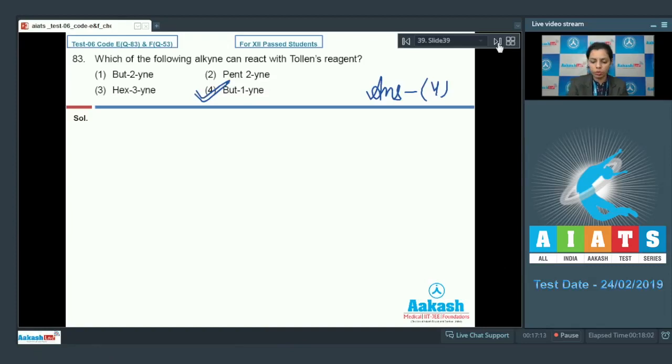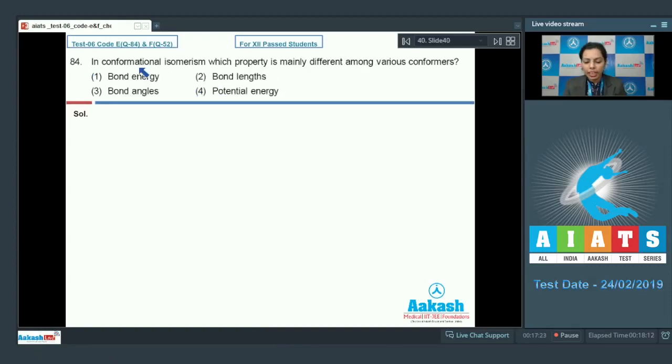Let's take question number 84. In conformational isomerism, which property is mainly different among the various conformers? If we talk about the conformers, these are also considered as a kind of isomers in which bond energy is same, bond length is also same, and the bond angle is also same, but there's a difference of the potential energy. On that basis we choose option 4 as the correct option for this question.